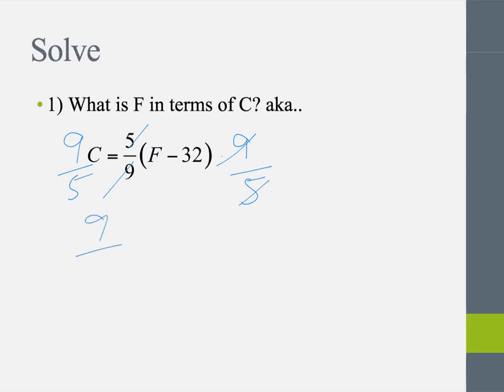So I have 9 5ths C equals F minus 32. And then one last step, add 32.